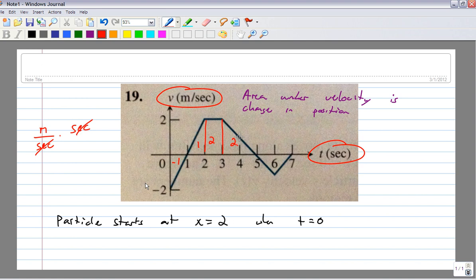So, from time 3 to time 5, it goes right 2. Time 5 to time 7, the area of that triangle is going to be a negative 1, because it's 2 times the height of 1, and then half that.